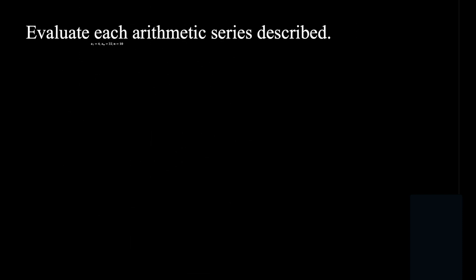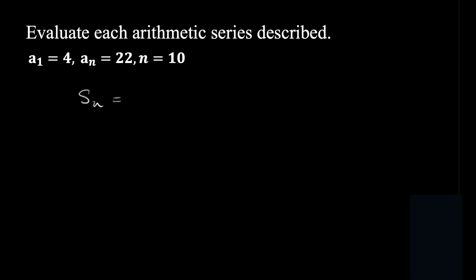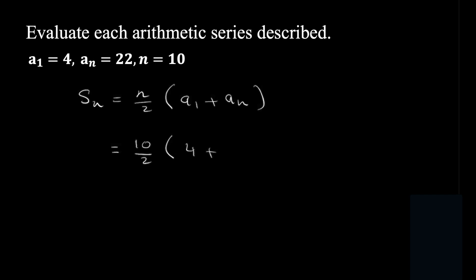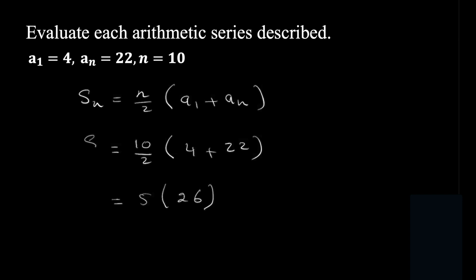Another example: what if it's given straightforwardly? a1 equals 4, an equals 22, and n equals 10. Just replace in the formula. Sn equals n over 2 into a1 plus an: that's 10 over 2 into 4 plus 22, which is 5 times 26. So S10 equals 130.